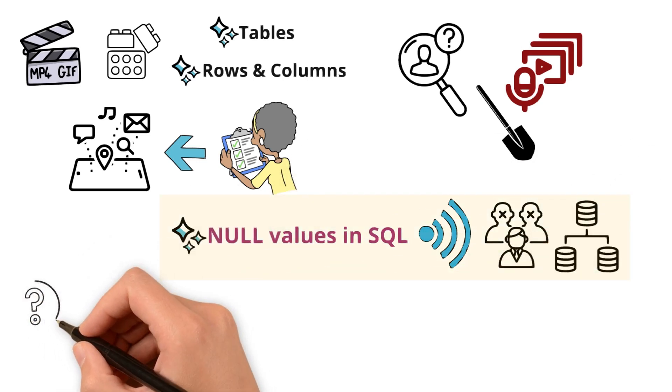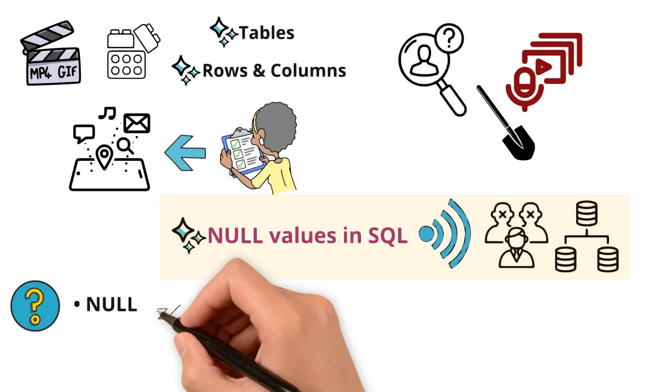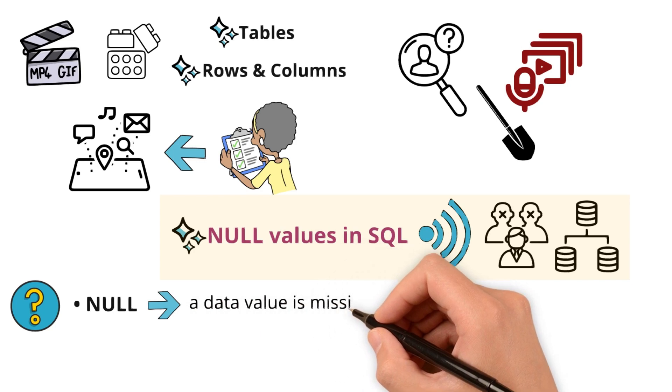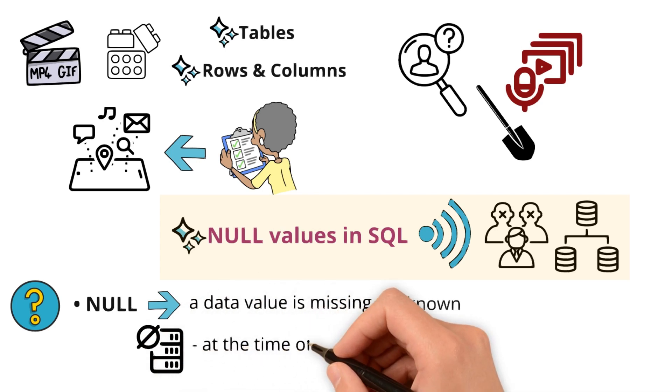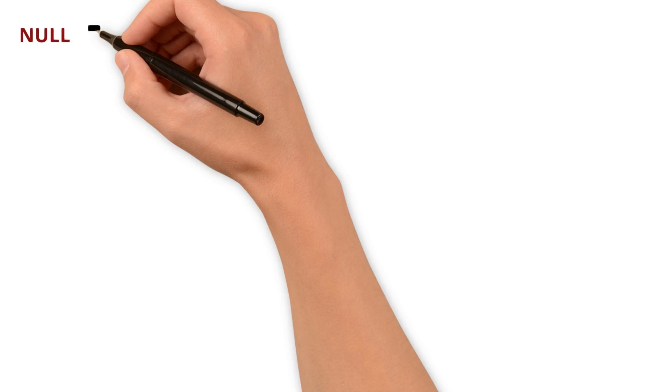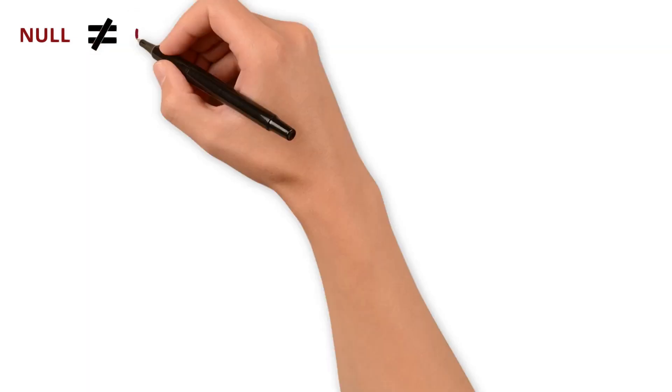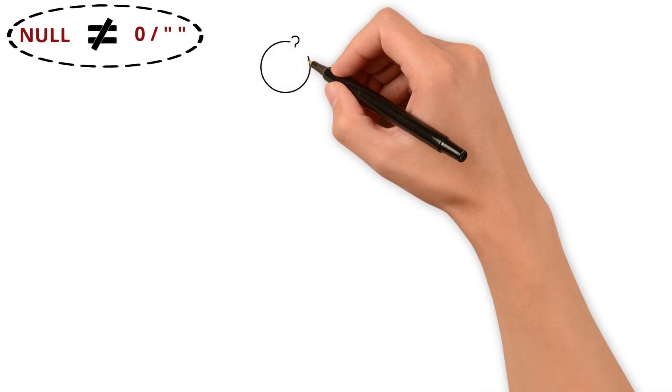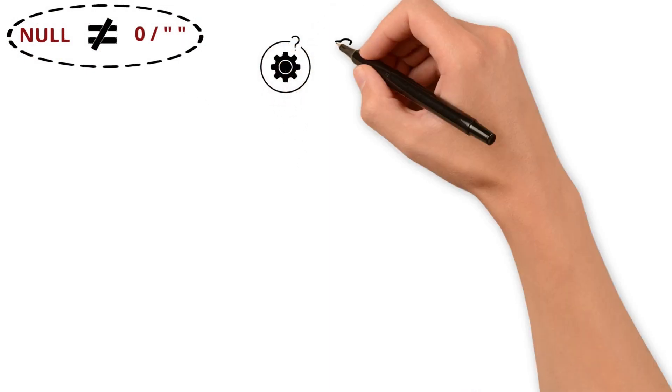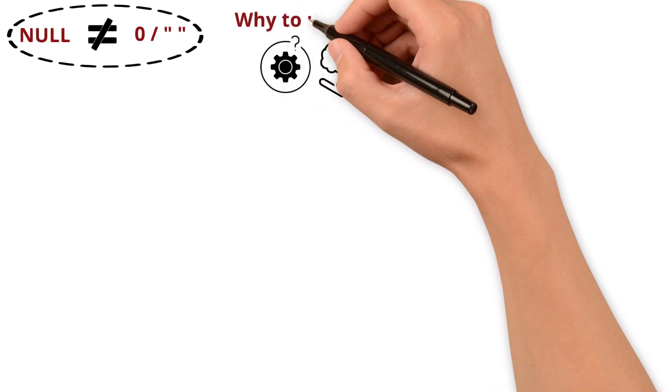What is the meaning of null in the first place? Null signifies that a data value is missing or unknown. It is used when the exact value is unknown or unavailable at the time of data entry. It is not the same as 0 or an empty string. But before we talk about how it is different from 0 or empty string, let's understand why to use null.